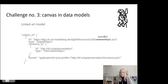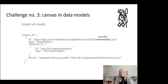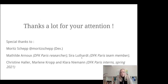Challenge three: within our data curation project we are working on describing data in machine-readable form using the Linked Art data model. For the moment, you cannot properly refer to a canvas — for example, saying an item is 'subject of' a canvas — you can only say an item is 'subject of' a manifest. These are the three challenges we face, and we'd be very happy about your feedback. Moritz Schepp and I are online now — thank you for your attention.